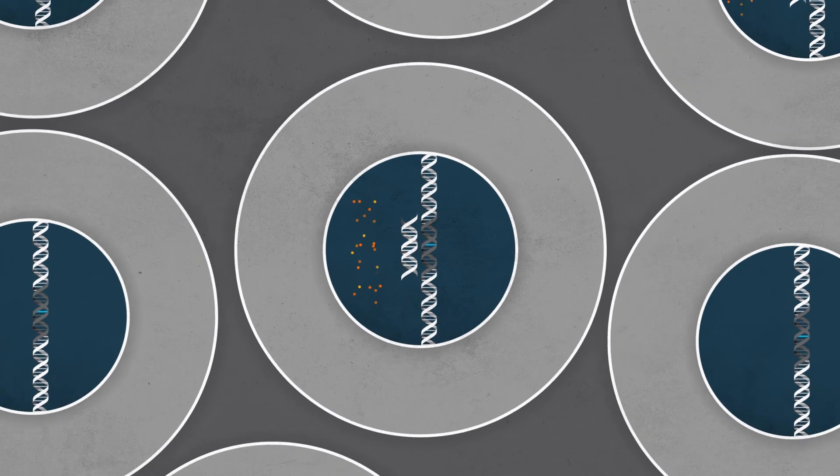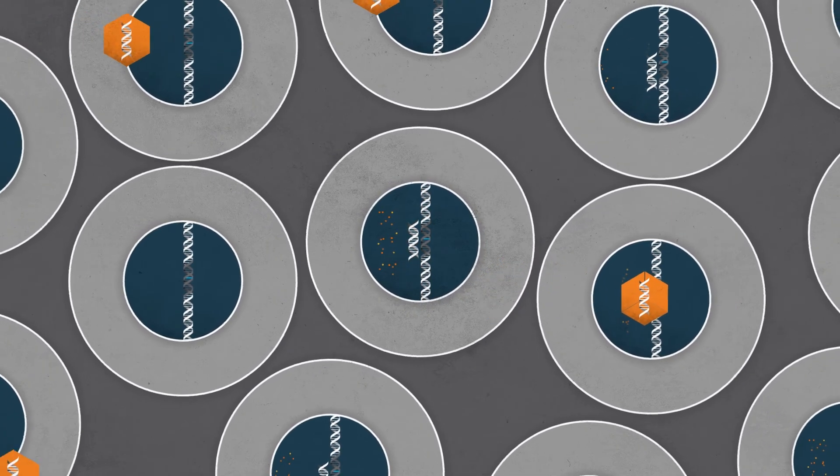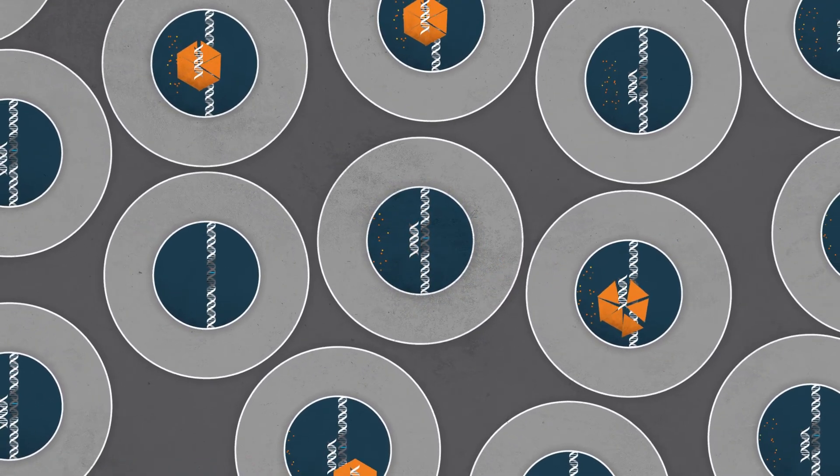The vector is then naturally broken down by the body, but the gene stays right where it was delivered. The gene starts working to make protein the body needs to work as it should.